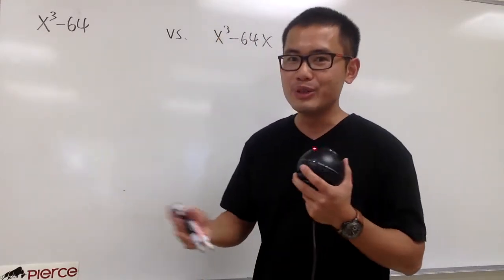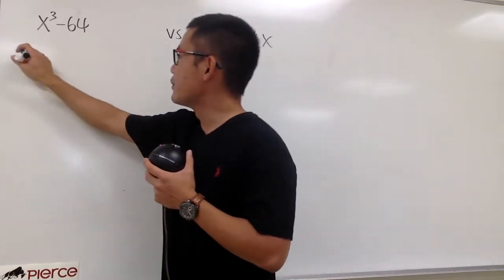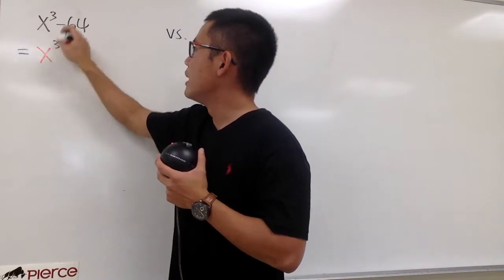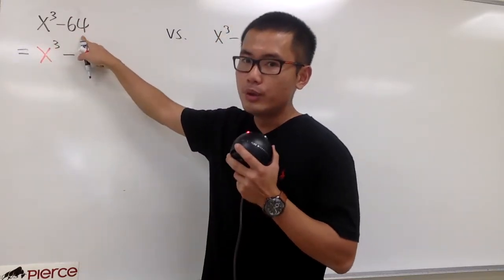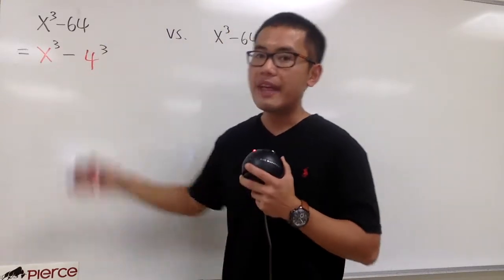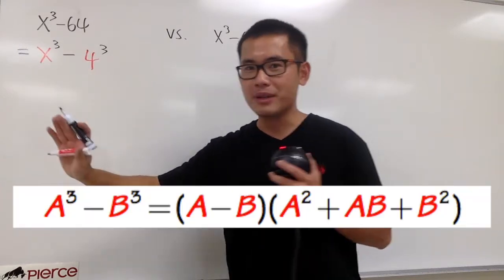And then after that, we can just use the formula to factor this out. So, let me set this up for you guys. This is the same as x to the 3rd power minus, for the 64, we look at this as 4 to the 3rd power. And now, we can apply that formula to factor this out. And the formula is right here.